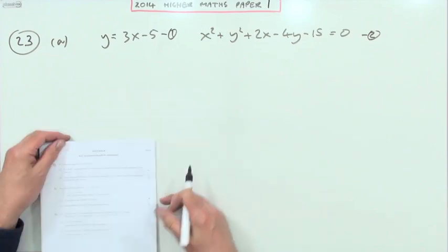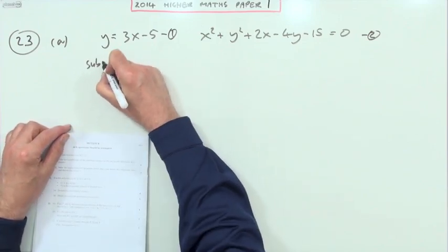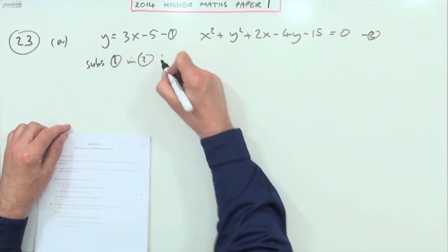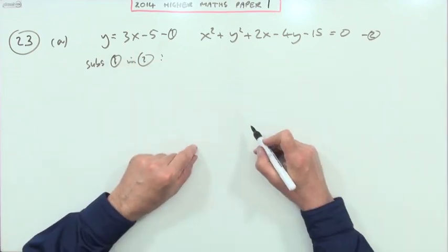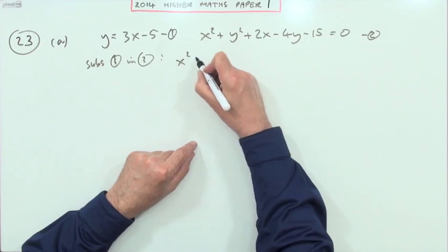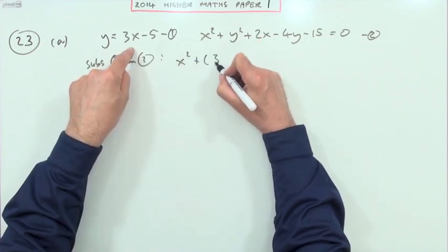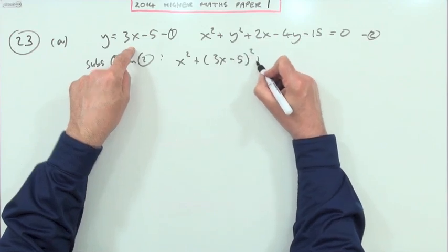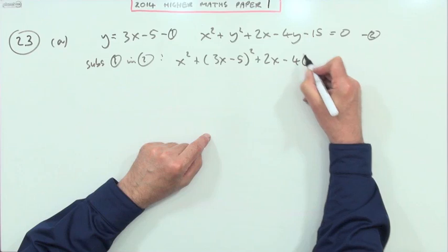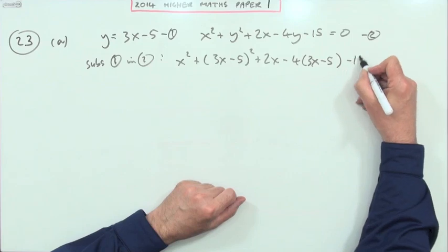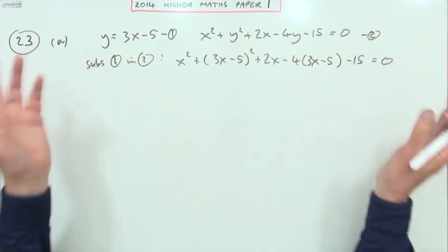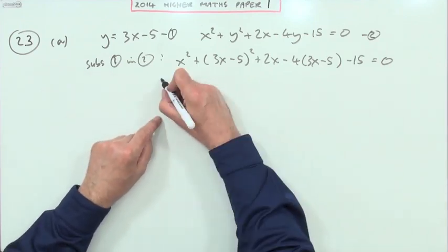If it's an intersection you're looking for, then I'm going to substitute one into two. It's a standard wherever you see y, write 3x minus 5. So x squared is fine but y is 3x minus 5, 2x is fine but y is 3x minus 5 minus the 15 equals zero.